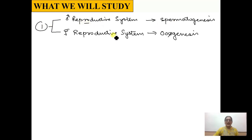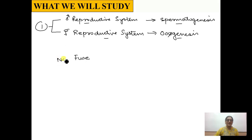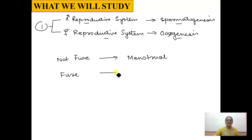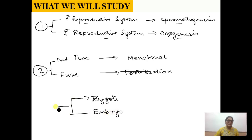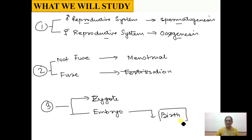Once both gametes are formed, two things can happen: either the gametes will not fuse with each other — which leads to the menstrual cycle — or they will fuse, leading to fertilization. After fertilization, a unicellular zygote is formed, which develops into a multicellular embryo. The embryo is then born, takes its unique identity, and only then is sexual reproduction complete.